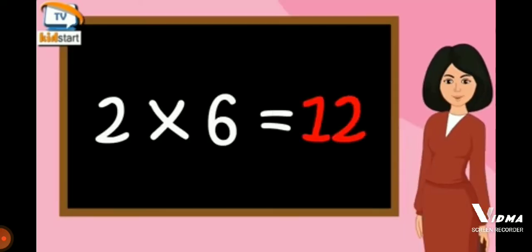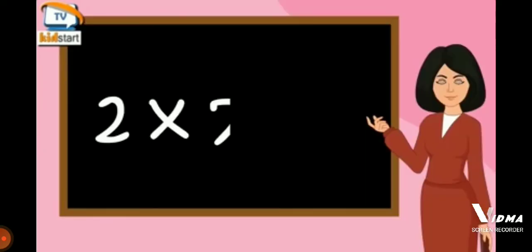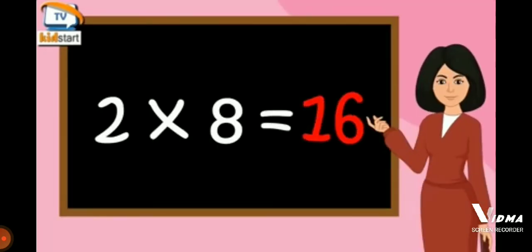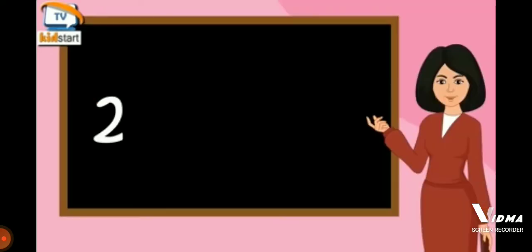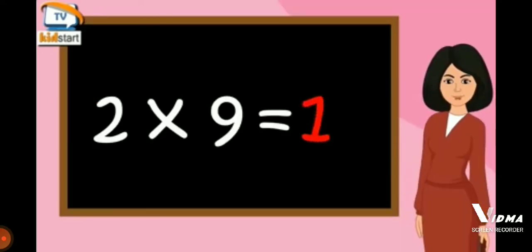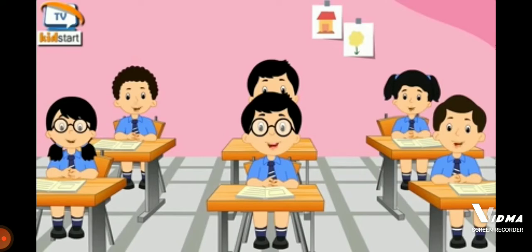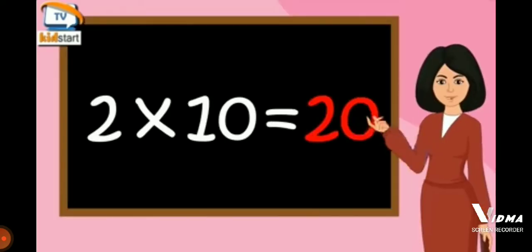Two sixes are twelve. Two sevens are fourteen. Two eights are sixteen. Two nines are eighteen. Two tens are twenty.